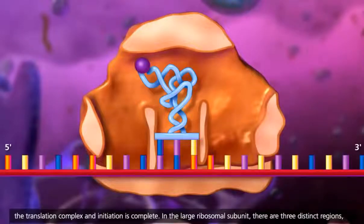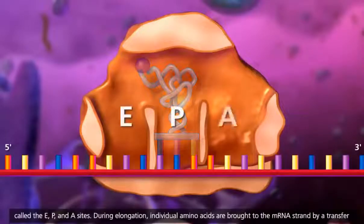In the large ribosomal subunit, there are three distinct regions called the E, P, and A sites.